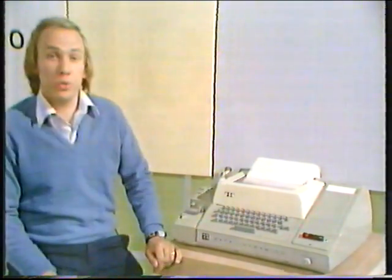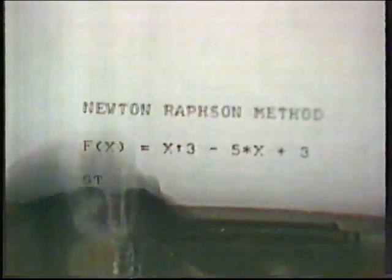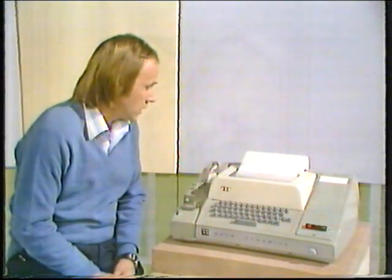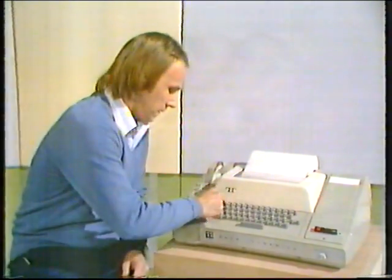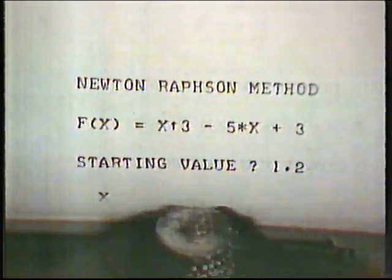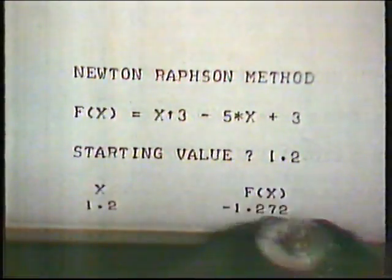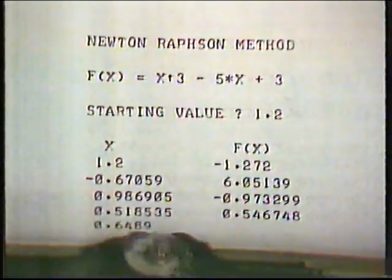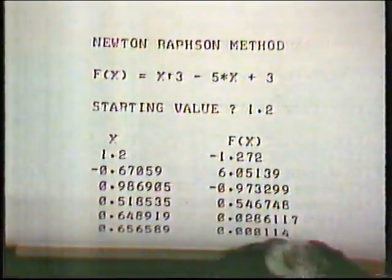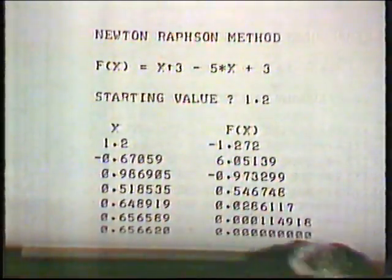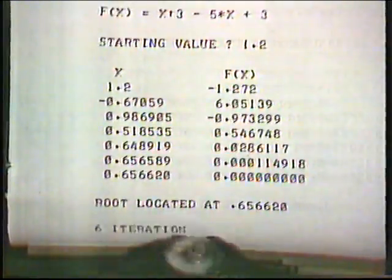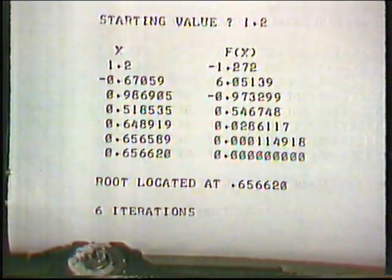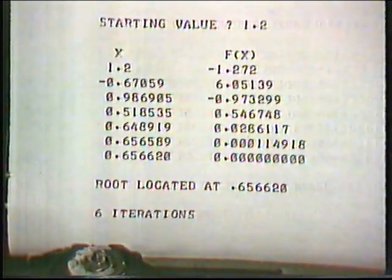The computer is all ready to run with Newton's method. There you can see our cubic. We need to put in a starting value — I'm going to choose a starting value of 1.2. For this demonstration, keep your eyes fixed on the column headed f(x). We can see the function values are getting smaller, and after only six iterations, we've converged to the root near 0.65, which was the one we found with the calculator.